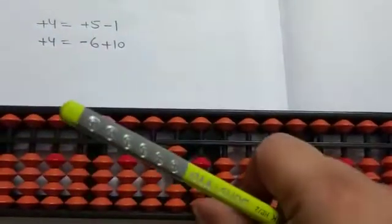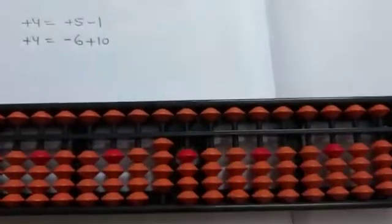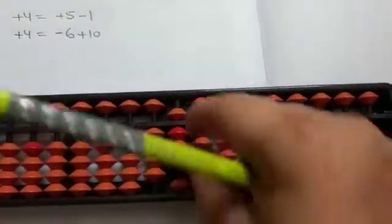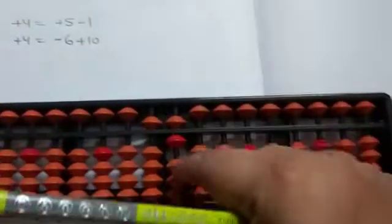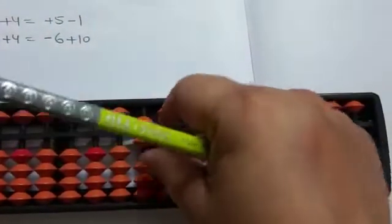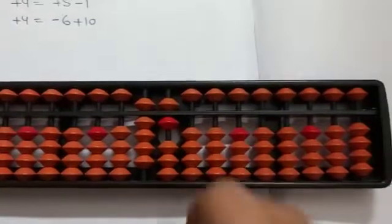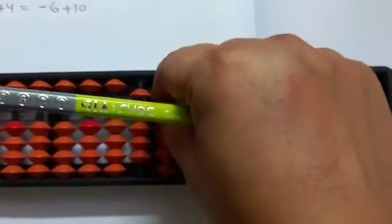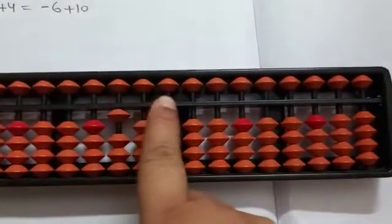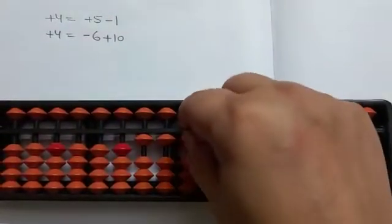Again plus 4, again plus 4 — continuing the pattern. Now minus 6 minus 90 plus 100 equals 100. Again plus 4 is 104. Again plus 4, again plus 4, again plus 4 — plus 5 minus 1. Again plus 4: minus 6 plus 10.